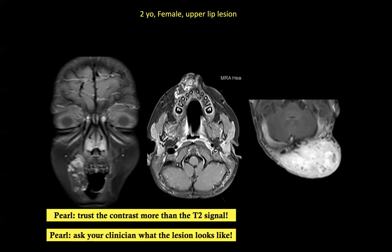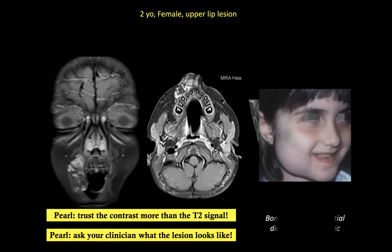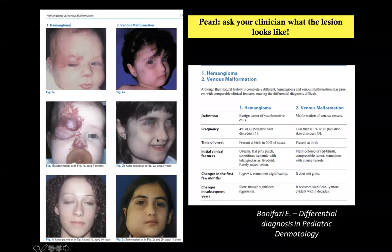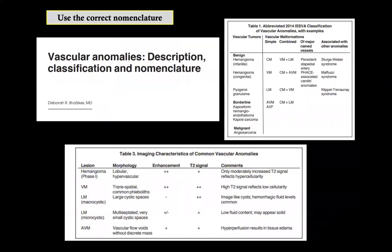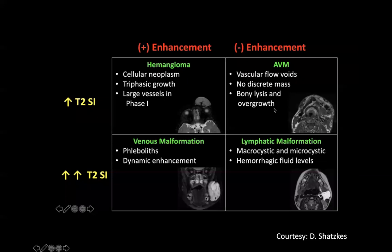Remember to trust contrast enhancement more than T2 signal. Also ask the clinician what the lesion looks like — venous malformation will appear bluish. A very useful book by Ponifaci on differential diagnosis in pediatric dermatology notes that hemangioma is most often not present at birth, grows after birth, then decreases over time, while venous malformation slowly grows and is present at birth. Use the right nomenclature: lymphatic malformation, venous malformation, venolymphatic malformation, and AVM are vascular malformations, while infantile or congenital hemangioma — which look very similar on imaging — are vascular tumors. If you can, read the beautiful paper by Deborah Shatzkes describing the classification and nomenclature of vascular anomalies.